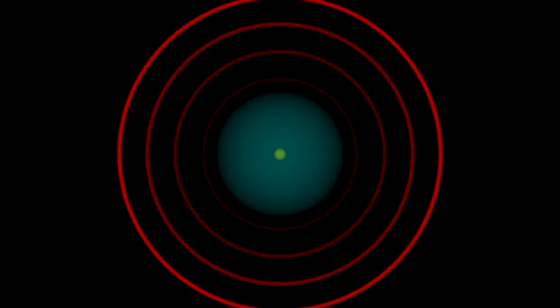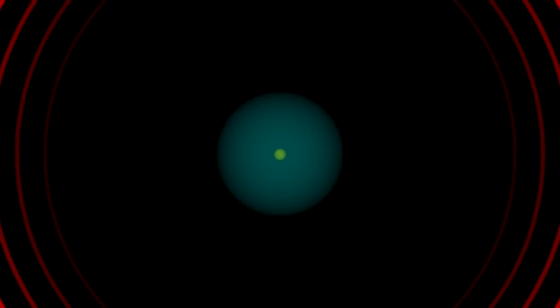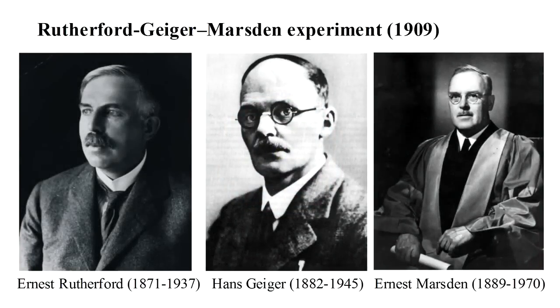The Thomson model seemed very promising. It could explain how an atom could emit radiation at a characteristic frequency, but then an experiment performed by Rutherford, Geiger and Marsden in 1909 pulled the rug out from under this picture.